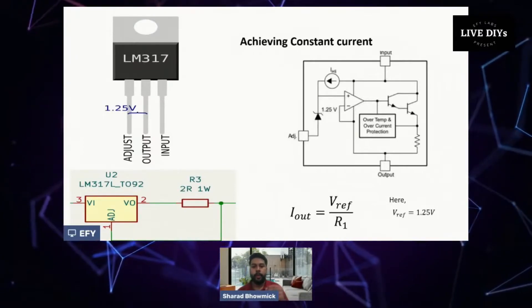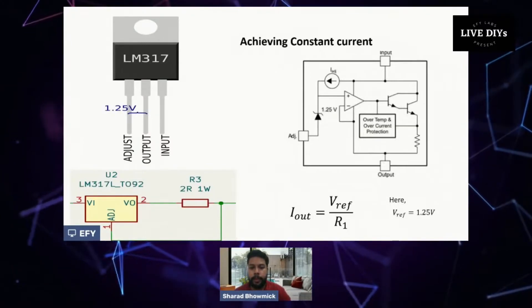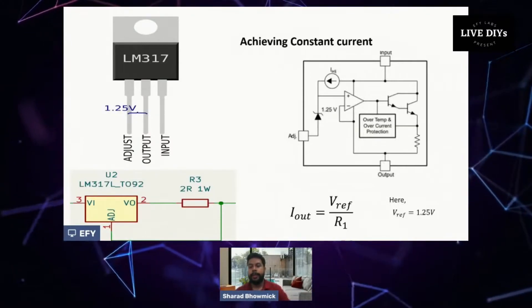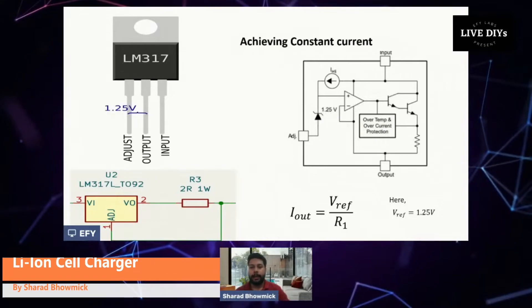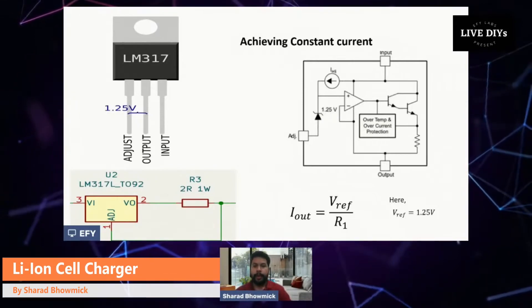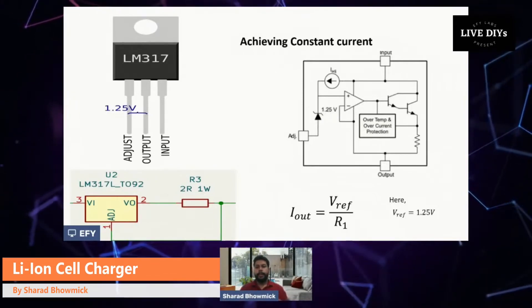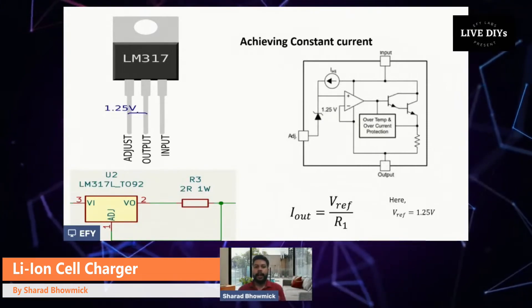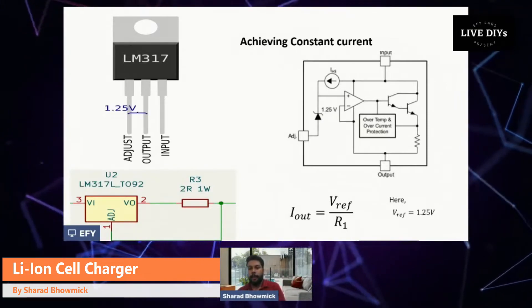Since we want our cells to have lower current, we'll be keeping it as 2 ohms resistor, so our current will be somewhat around 600 milliamps. In this case our current won't exceed 0.6 amps.